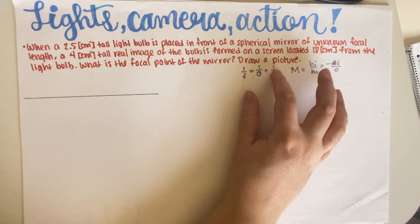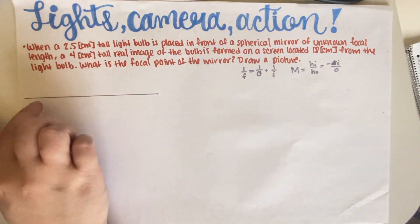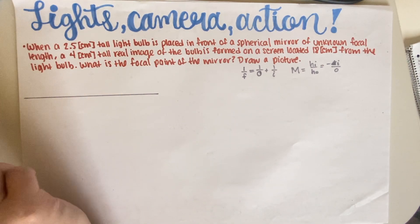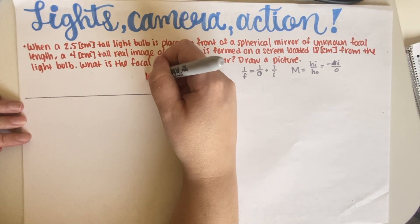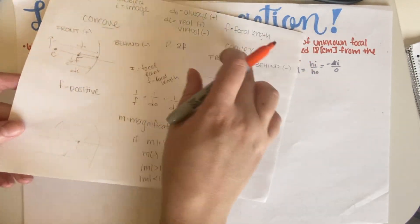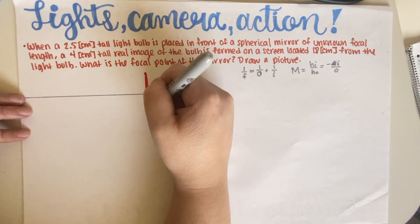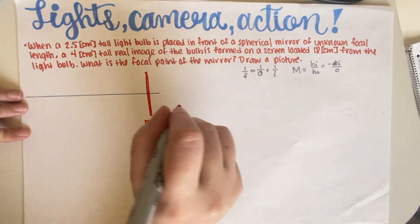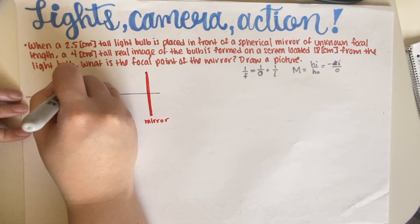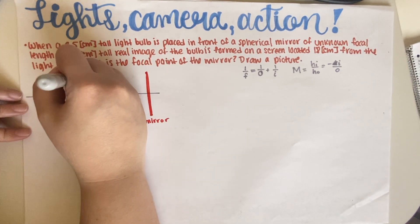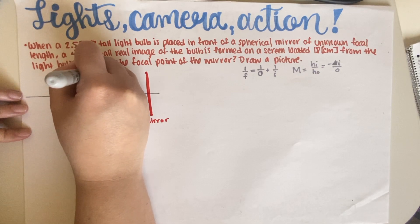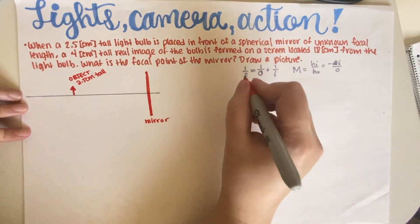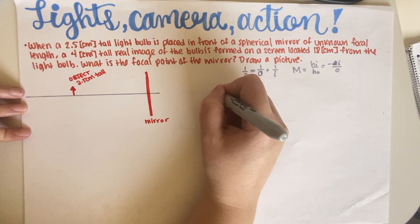As you can see I have the instructions over here, my two mirror equations, my thin lens equations, and I have a little line over here that I'm going to be using to draw my picture as suggested. So we have a mirror — I'm just going to put a straight line because I don't really know if it's concave or convex — so I'm just gonna say this is some mirror, and then there is a light bulb. This is the object.